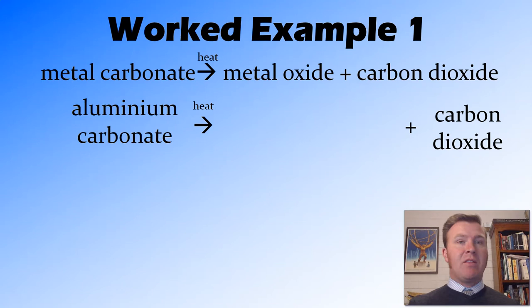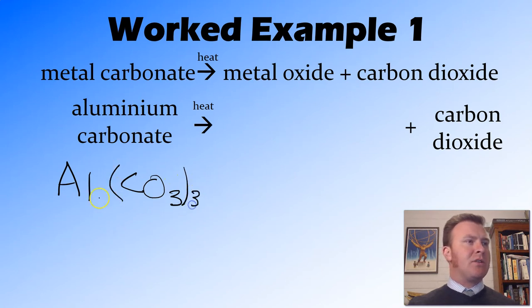At this point in time, I find that it's useful to work out the chemical formula for the things that we've got because that will help us with the products as we go forward. So aluminum carbonate, aluminum is Al, carbonate is CO3. Now aluminum has a valency of 3+, carbonate is 2-, so they're not the same. So we're going to have to swap and drop, which will give us Al2(CO3)3, and carbon dioxide is CO2.